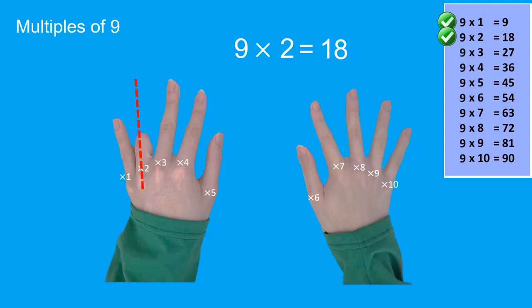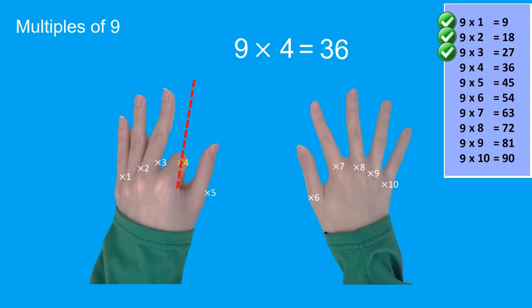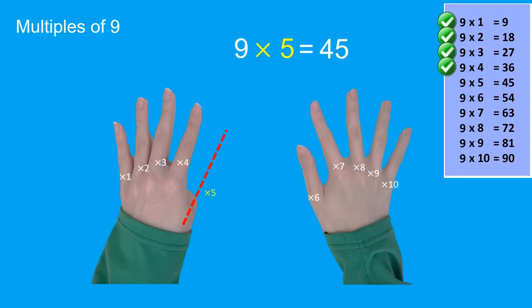We got nine times two correct. Now let's check the rest. Nine three twenty-seven, nine four thirty-six, nine five forty-five.